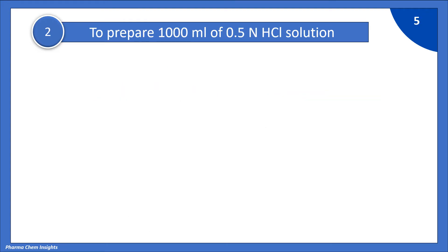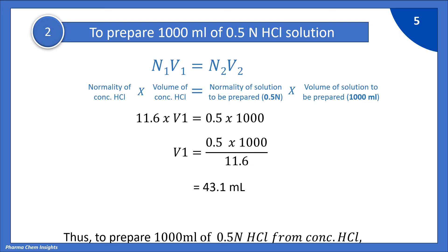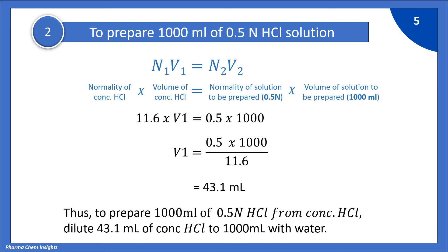Next example: to prepare 1000 ml of 0.5 normal HCl solution. Using the normality equation N1V1 = N2V2: 11.6 × V1 = 0.5 × 1000, so V1 = (0.5 × 1000) / 11.6. By calculating, we get 43.1 ml. Thus, to prepare 1000 ml of 0.5 normal HCl from concentrated HCl, dilute 43.1 ml of concentrated HCl to 1000 ml with water.